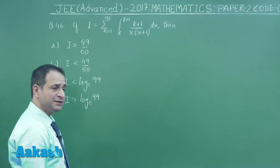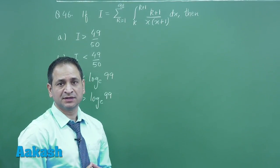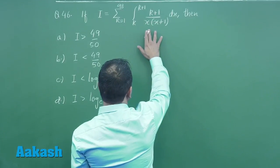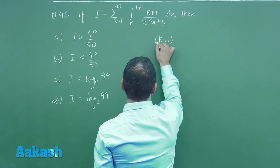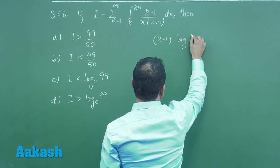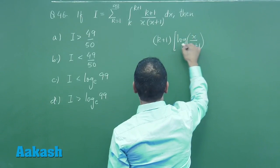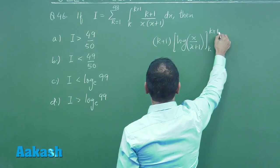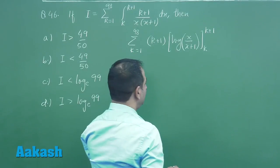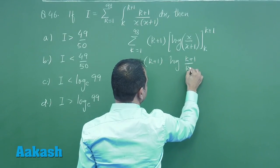This question is typically related to definite integration plus a summation of a series — a very different series. So we will be applying the difference method here. Let us first calculate the integration. You can clearly see the integration of this part: k plus 1, this being constant, I am taking outside the integral sign. It is log of x upon x plus 1, applying the limit from k to k plus 1, and here we have a summation from k equal to 1 to 98. This will lead to log of k plus 1 upon k plus 2.